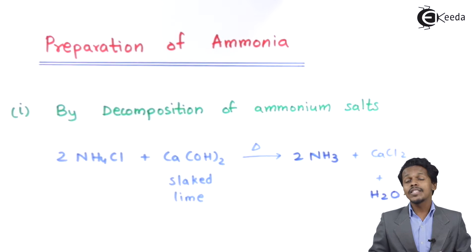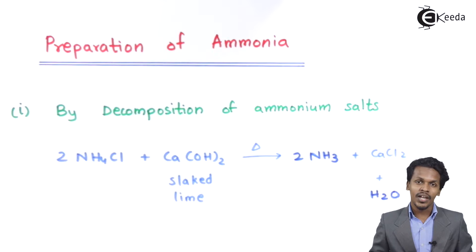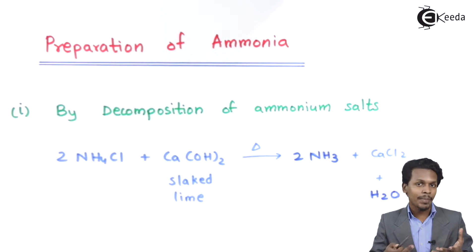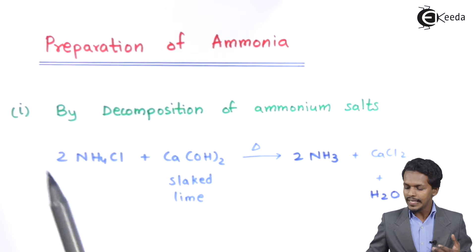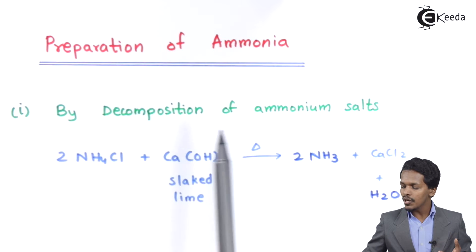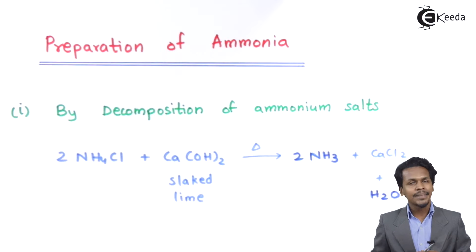In this topic we are going to talk about the preparation of ammonia. There are different methods from which we can prepare or obtain ammonia. The first one is by decomposition of ammonium salts.